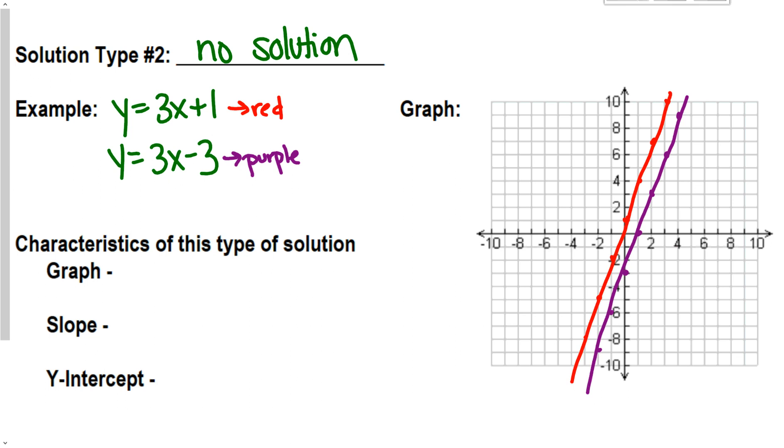So, what I notice with a no solution, visually what I notice here is I get a set of parallel lines. These are parallel lines. This space in between these two dots is the same every single time. So, that's what's telling me that they are parallel, so they will never intersect. And if they never intersect, I never get a solution.